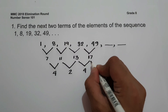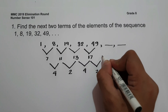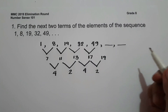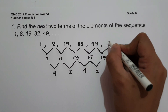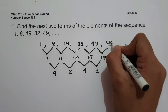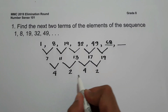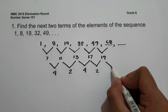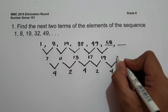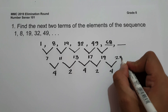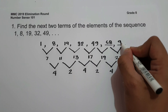The next second difference will be 2, so 17 plus 2 gives us 19. To find the next term after 49: 49 plus 19 is 68. Then the next second difference is 4, so 19 plus 4 is 23. And 68 plus 23 is 91.